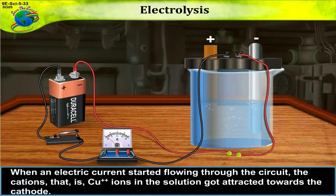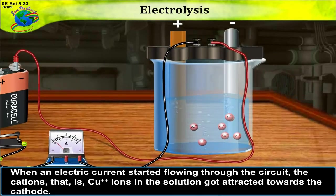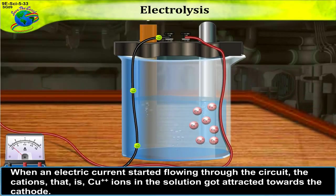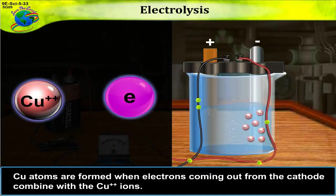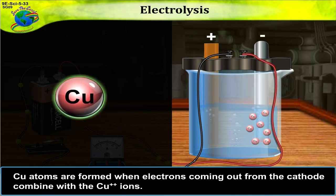When an electric current started flowing through the circuit, the cations, i.e. Cu2 plus ions in the solution got attracted towards the cathode. Cu atoms are formed when electrons coming out from the cathode combine with the Cu2 plus ions.